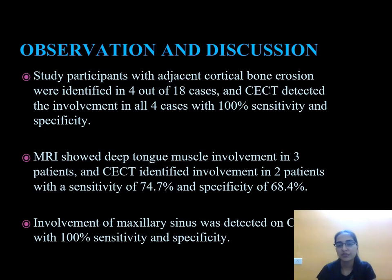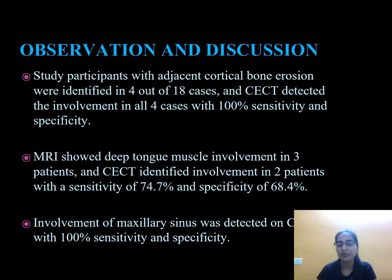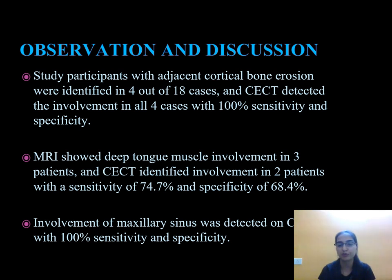In observation and discussion: adjacent cortical bone erosion was identified in 4 out of 18 cases, and CCT detected involvement in all four cases with 100% sensitivity and specificity. MRI showed deep tongue muscle involvement in three patients, while CCT identified involvement in two patients with a sensitivity of 74.7% and specificity of 68.4%. Involvement of maxillary sinus was detected on CCT with 100% sensitivity and specificity.